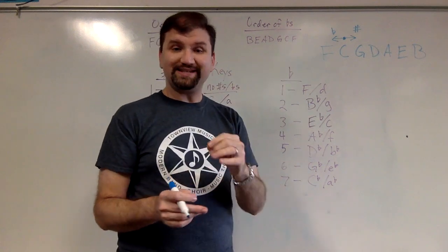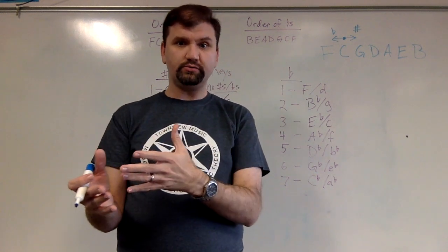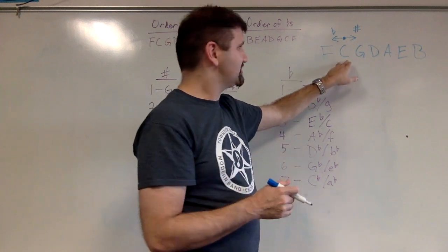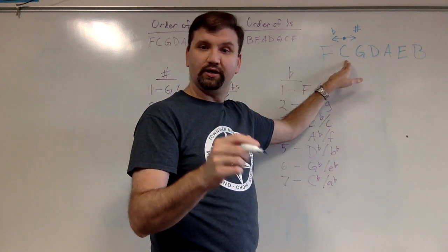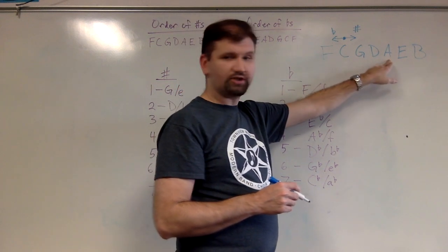But the order of sharps is not the name of the key. The sharp is not on DOE. The sharp is on T. So the order of sharps is this way, but the key starts here with zero and then one sharp and then two sharp and then three sharp.